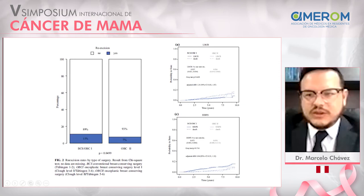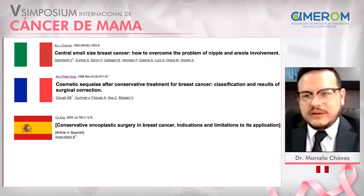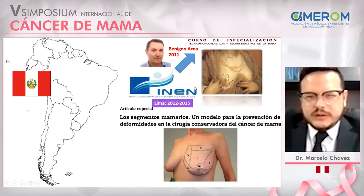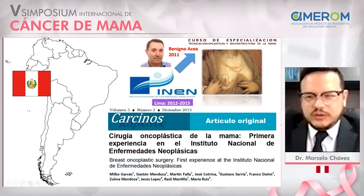We have papers from Italy by Galimberti, from France by Clough, and from Spain by Nacea. But what about our country, Peru? In Peru, we have had courses in oncoplastic surgery taught by Professor Benigno Céa, who taught us how to treat our women. The first experience in oncoplastic surgery in Peru was described by Garcés et al. at the National Cancer Institute.